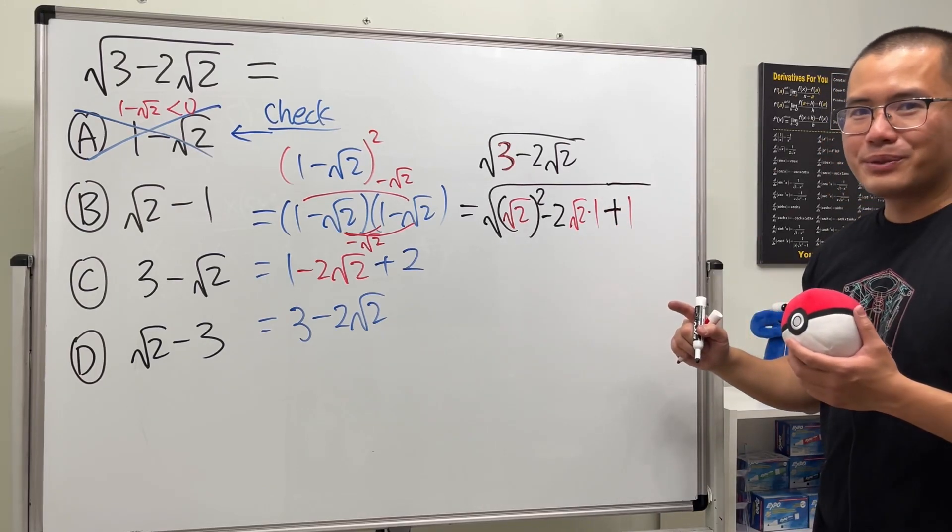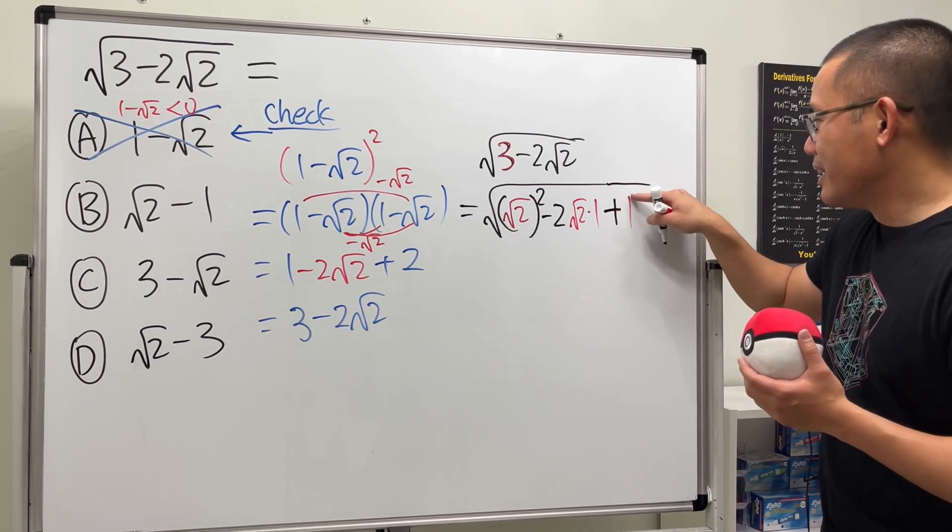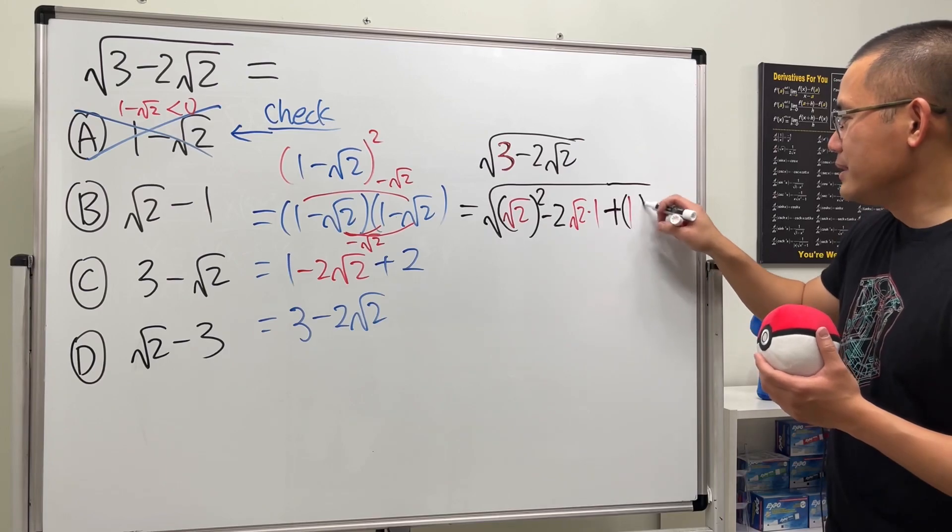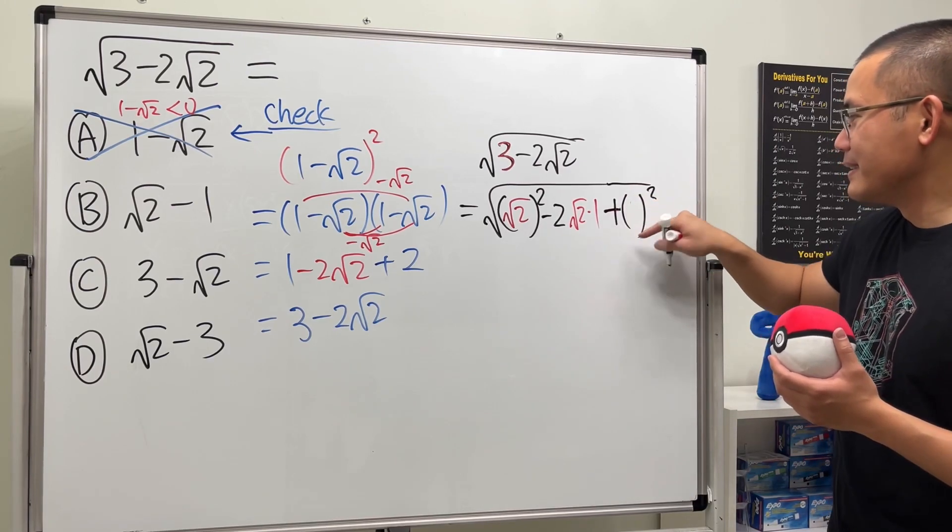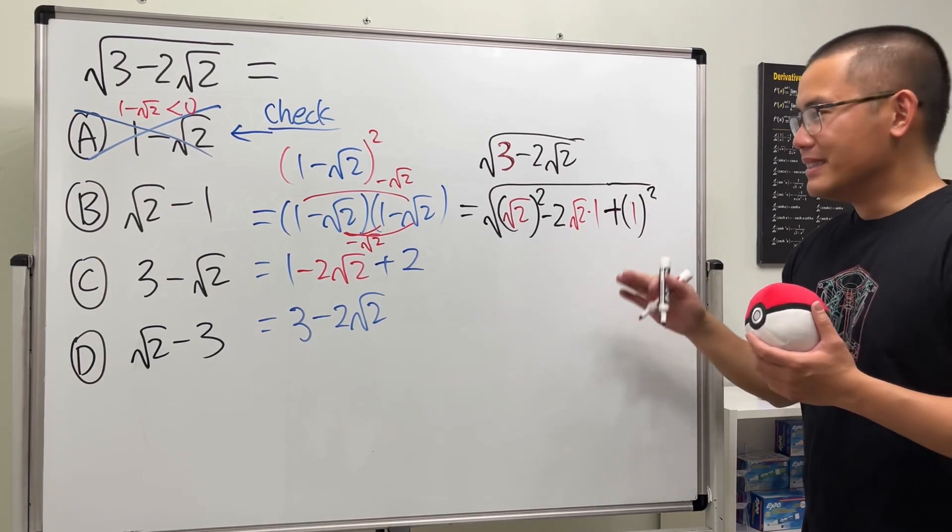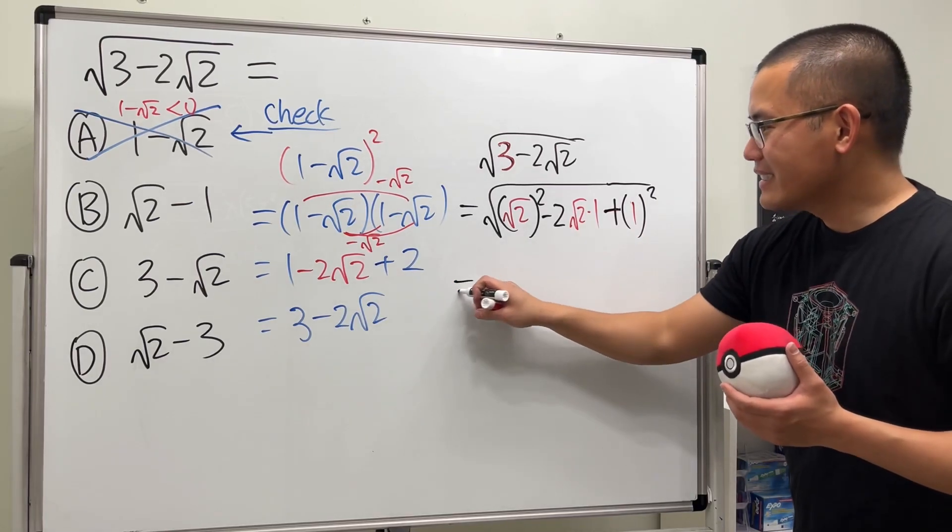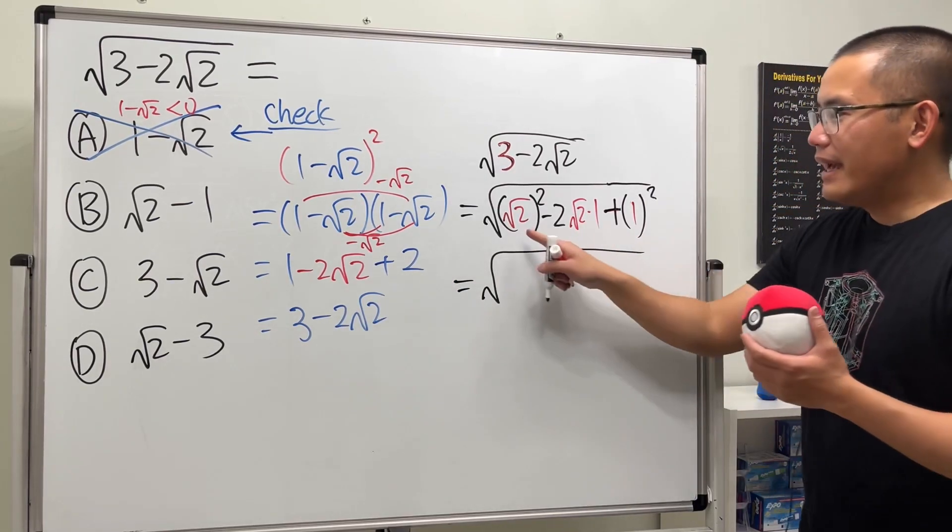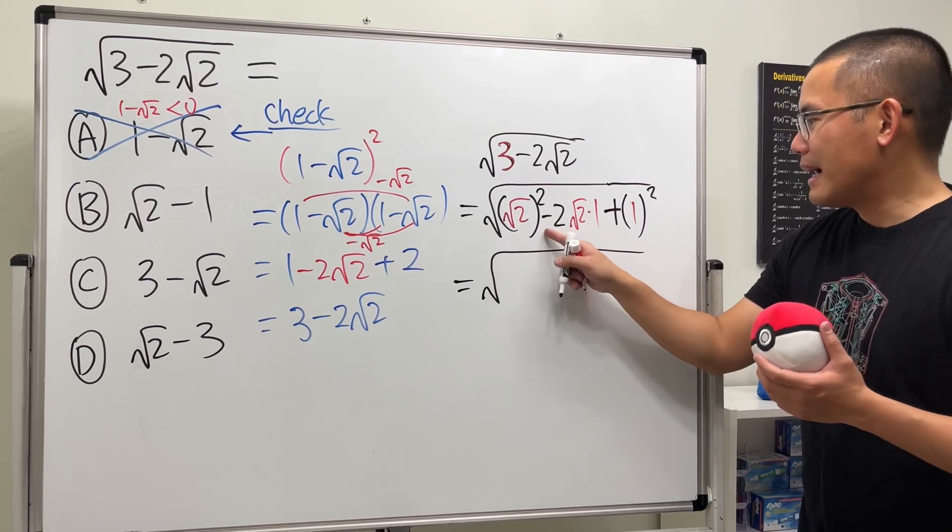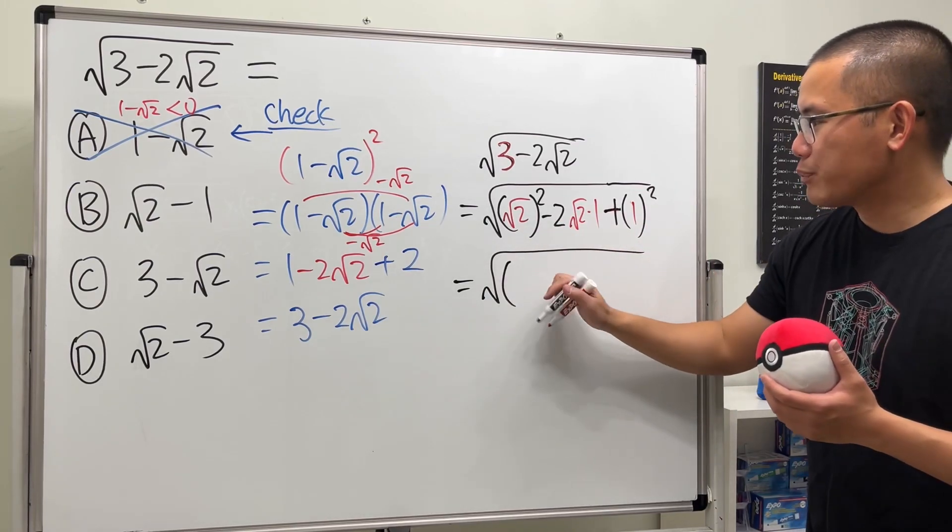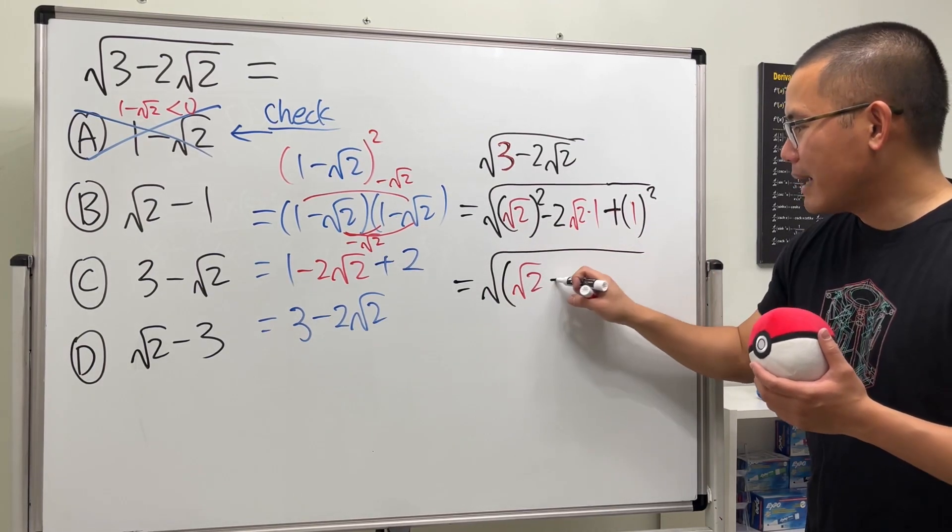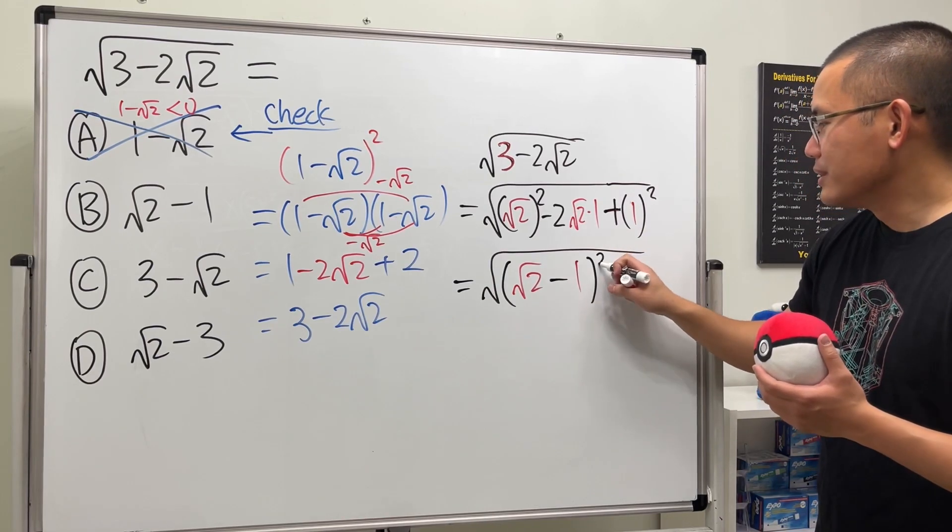And of course 1 is the same as 1². Perhaps make it fancier, let's put this in parenthesis and square that. In fact, the inside is actually a perfect square, and that's going to be (√2-1)². So we have (√2-1)² and then the whole thing squared.